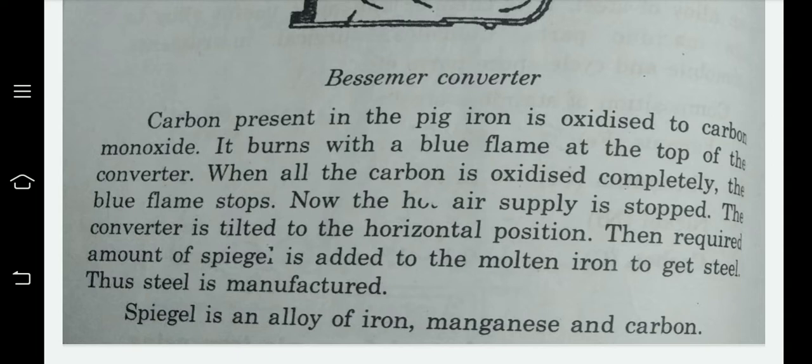The required amount of spiegeleisen is then added to the molten iron to produce steel. Spiegeleisen is an alloy of iron, manganese, and carbon.